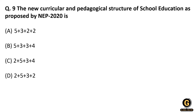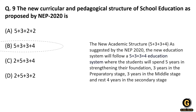The next question is on NEP 2020 — study this topic very carefully because there is a question on it in every shift and every exam since NEP 2020 was released. The question asks about the new curricular and pedagogical structure of school education as proposed by NEP 2020. The correct answer is 5+3+3+4: the first five years are for the foundational stage, the next three years for the preparatory stage, the following three years for the middle stage, and the last four years for the secondary stage.